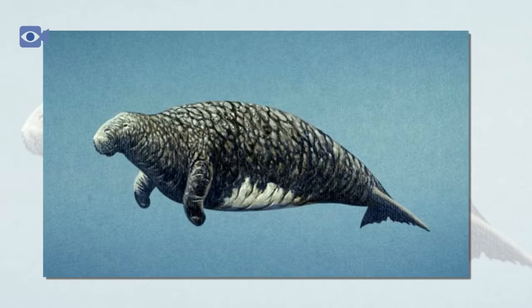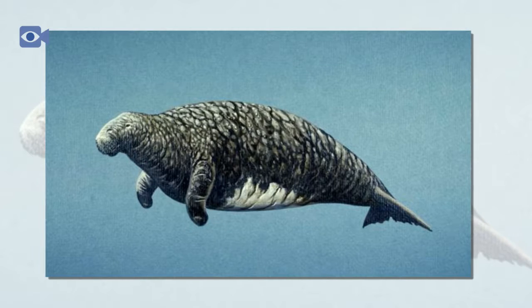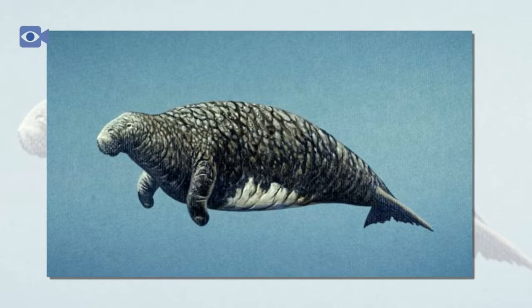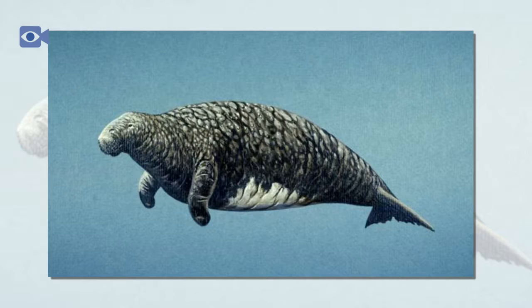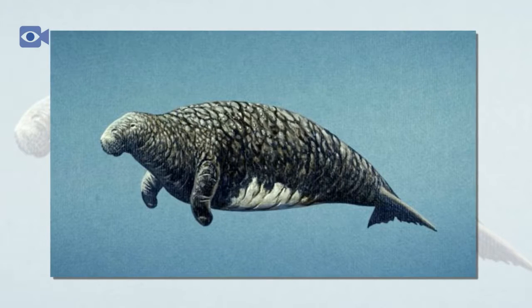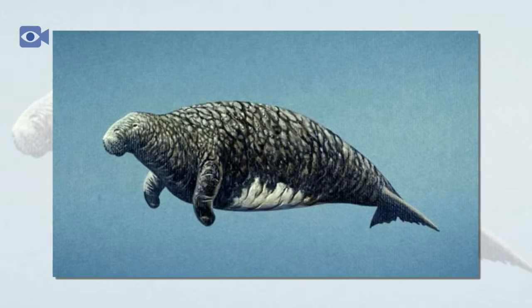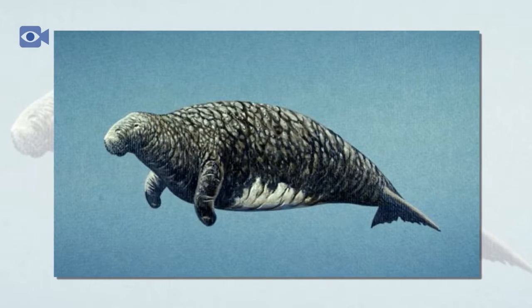The Steller's sea cow was said to be a tame animal that spent most of its time concerning itself with munching on kelp, which is possibly what made it so vulnerable later on. However, the Steller's sea cow was also said to be unable to submerge its enormous body fully underwater, making it an easy spot for human hunters.